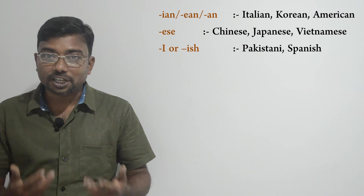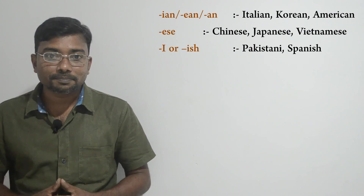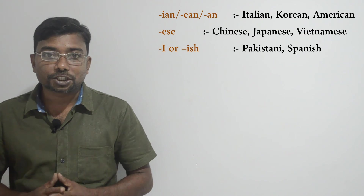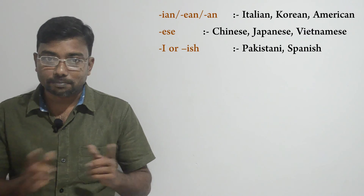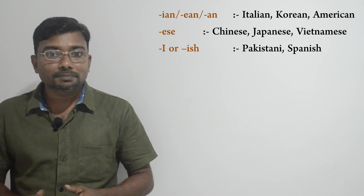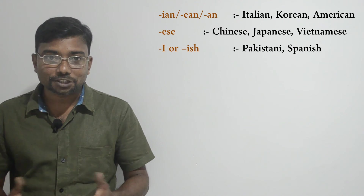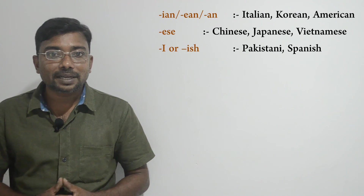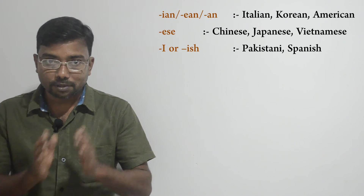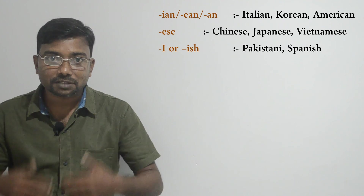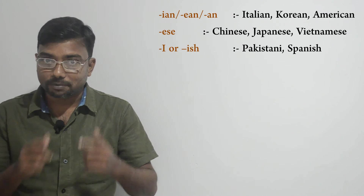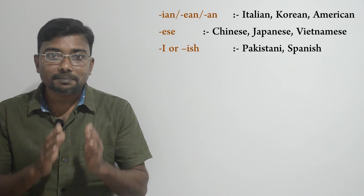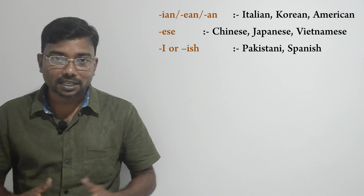We can also use the suffix '-ese' to make proper adjectives — for example, Chinese, Japanese, Vietnamese. As well as the suffix '-i' or '-ish' — for example, Pakistani and Spanish. These are very common suffixes used to make proper adjectives from proper nouns, but remember there are many more suffixes that can be used.